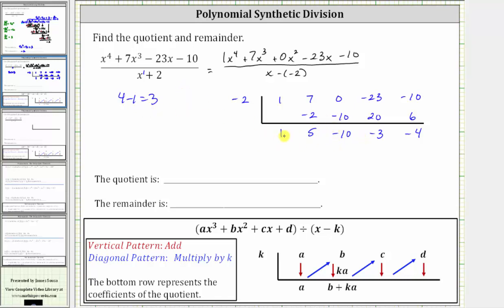So again, our quotient is going to be x cubed plus five x squared minus 10x minus three, and the negative four is the remainder.